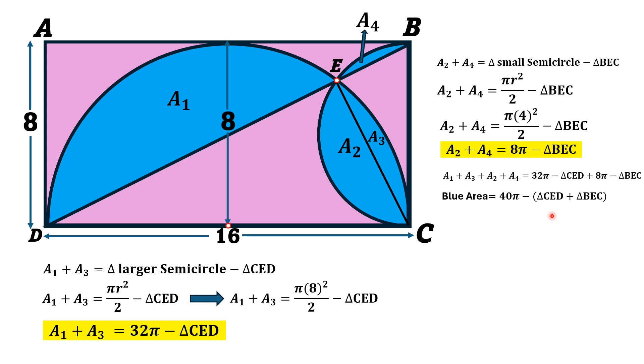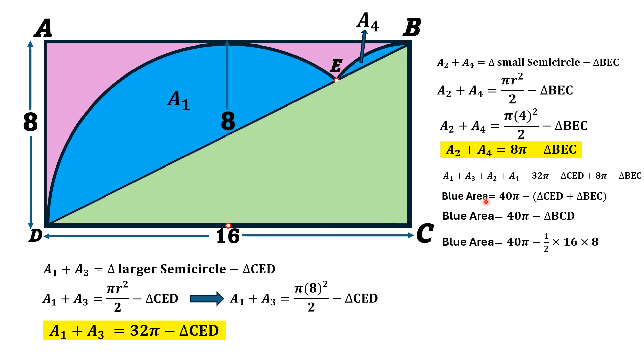Now, if we look at the triangle CED plus BEC, this is actually equal to the triangle BCD. This triangle BCD. So area of triangle BCD is equal to half times 16 into 8. So blue shaded area will be 40π minus 64.